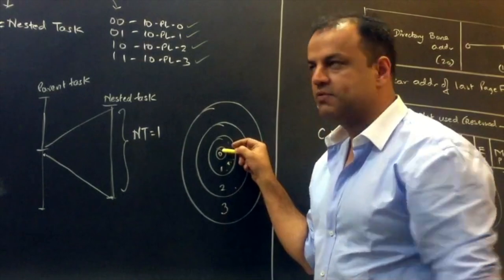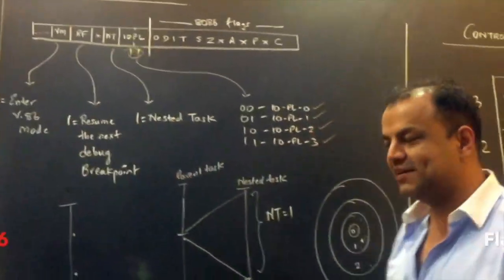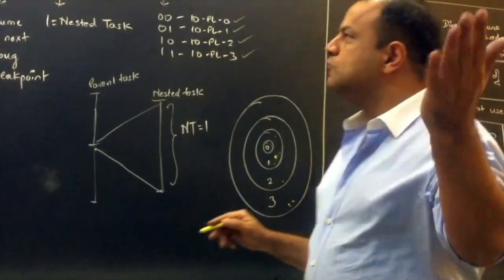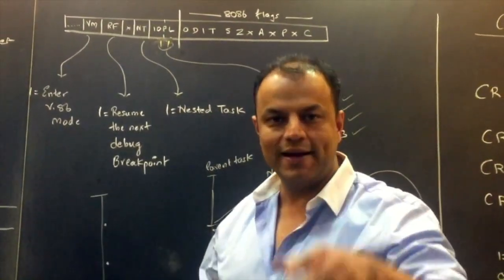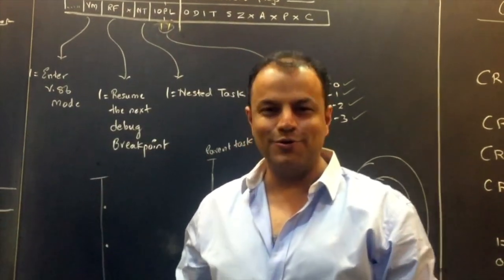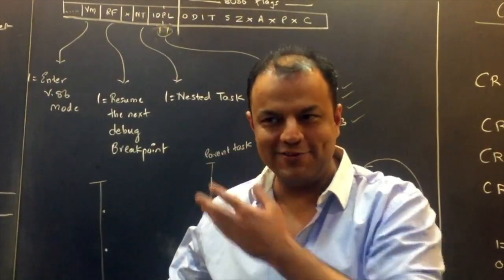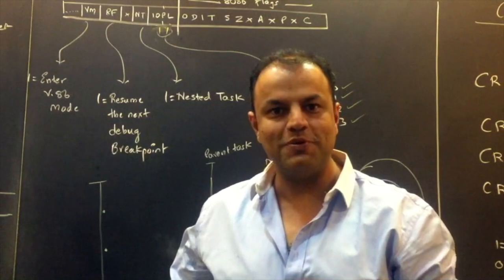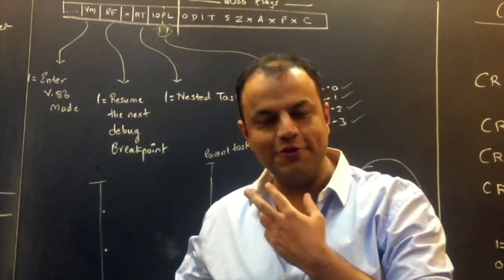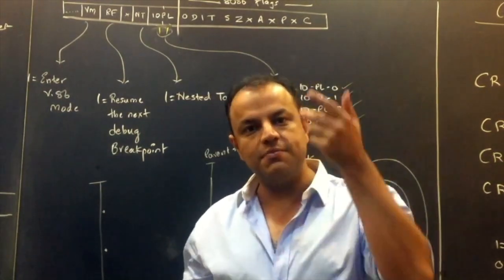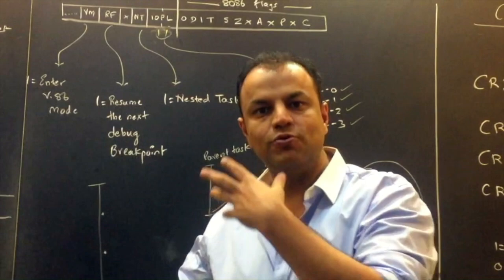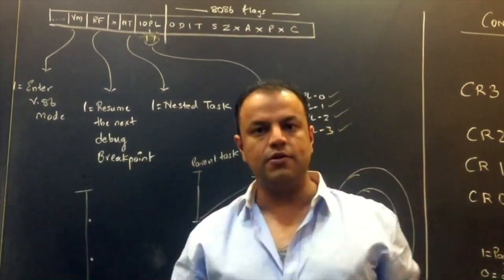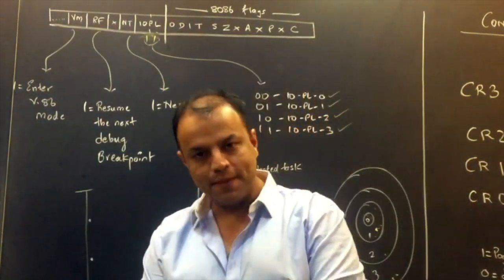If you kept IOPL as 00, only programs of PL0 can access IO devices — they are placed at the highest privilege. If you kept the bits as 11, IO devices are at the lowest privilege level and all programs can access them. The operating system — not the end programmer — controls these bits. If the programmer could change them, they'd just set them to 11. These bits can only be changed by programs running at PL0.